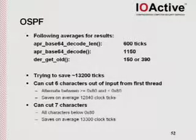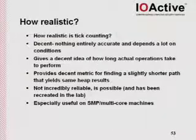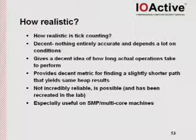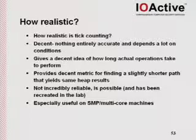Or we have the option of cutting seven characters, putting them all below hex 80, and saving about 1,303. In lab conditions, it was actually able to replicate that and get an exploit working.